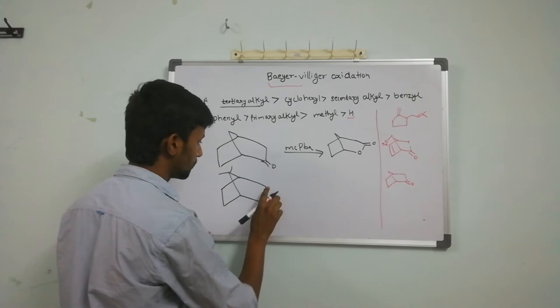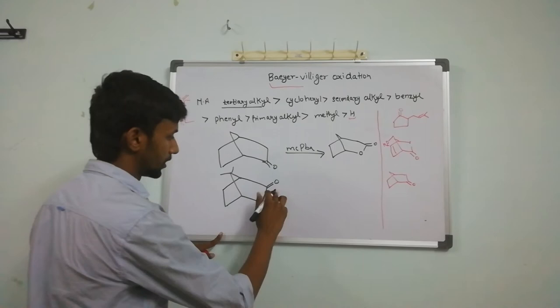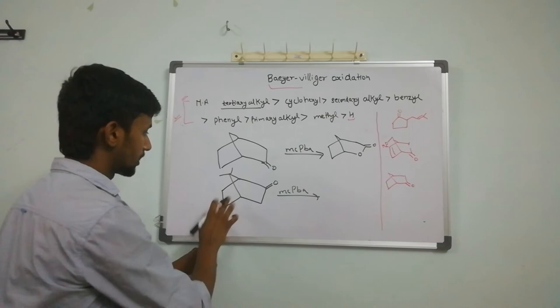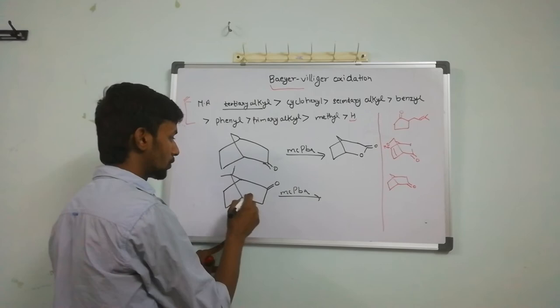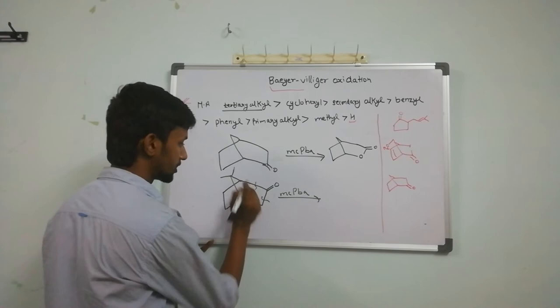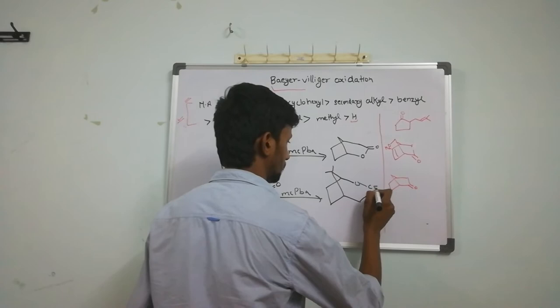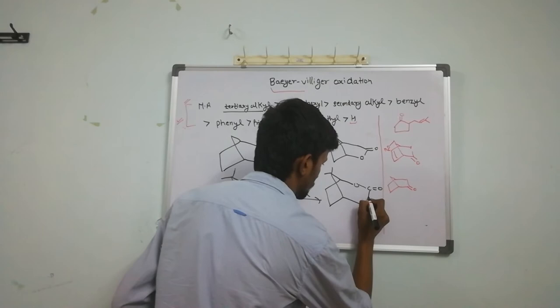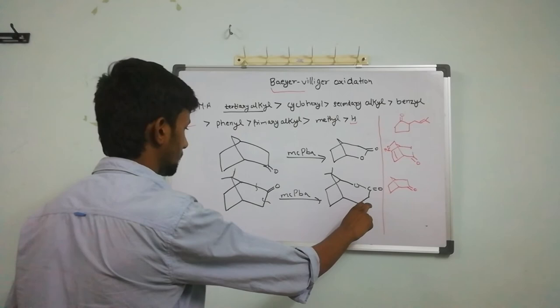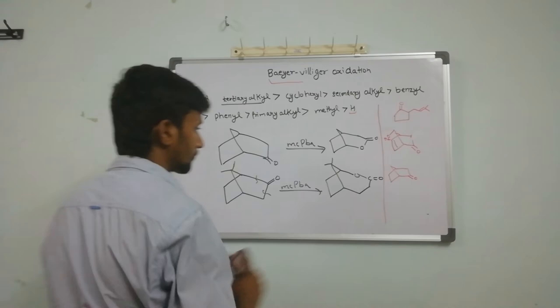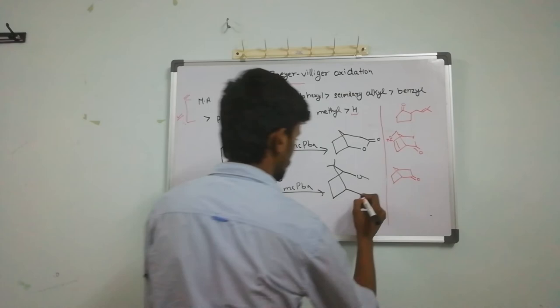In this example there are two methyl groups. It is also a simple case, not an exceptional case, because the steric factor from both methyl groups is equal on both sides. Again, this one is tertiary and this one is secondary. So our product will have the oxygen inserted between the tertiary carbon and the carbonyl carbon. This will be our final product.